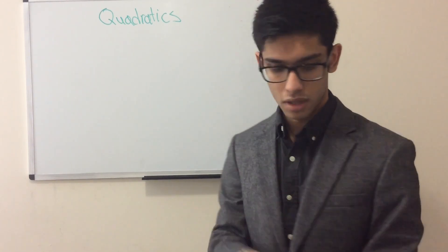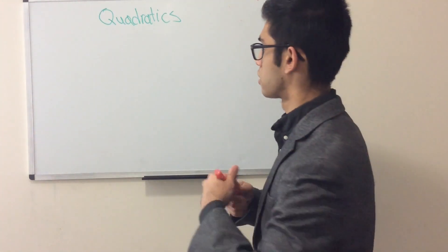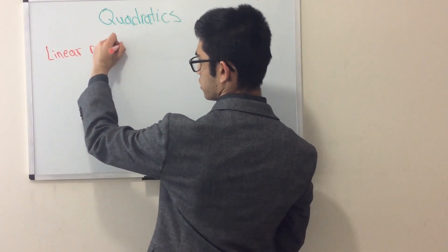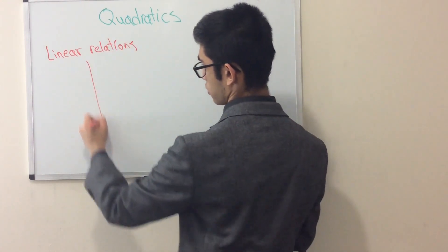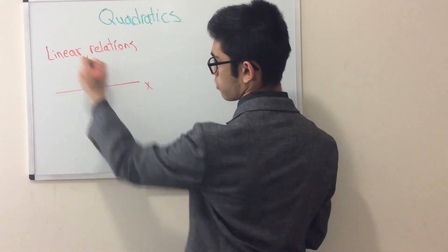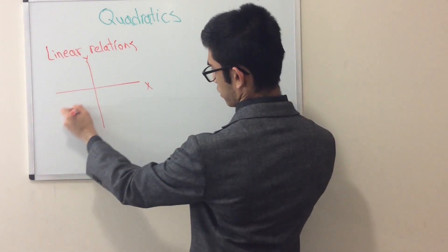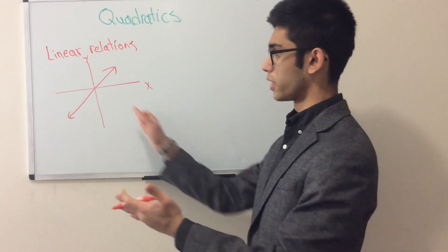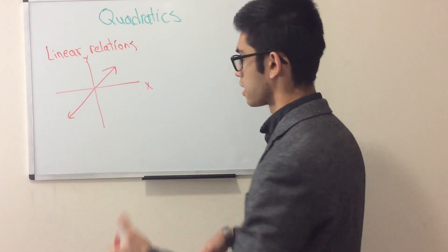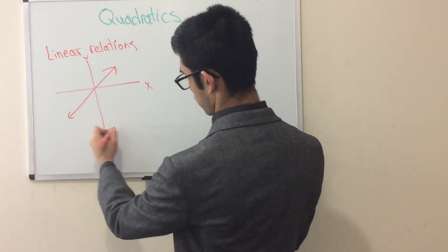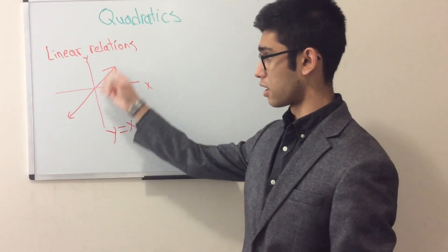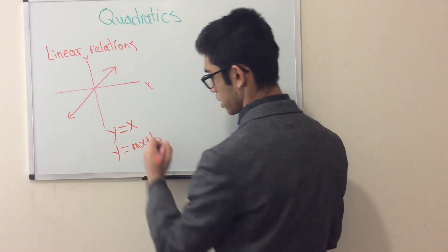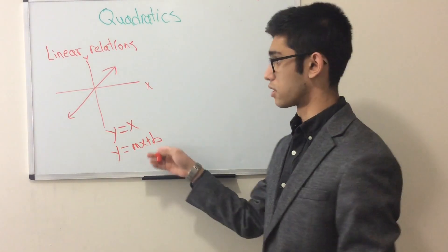Before we get into something completely new, let's jump back to something familiar: linear relations. I'll switch colors to color-coat things. A linear relation, visually, is just a straight line on an x-y axis. You should be familiar with this from previous units. Mathematically, it's written as y equals x, or more generally, y equals mx plus b, where m is the slope and b is the y-intercept.